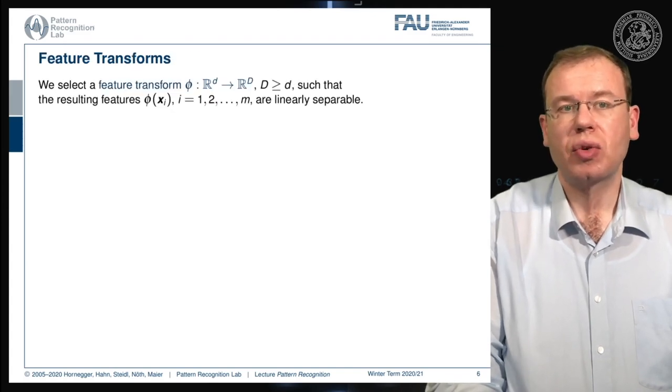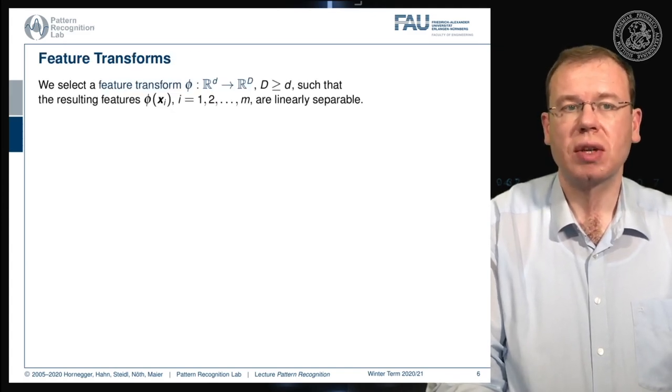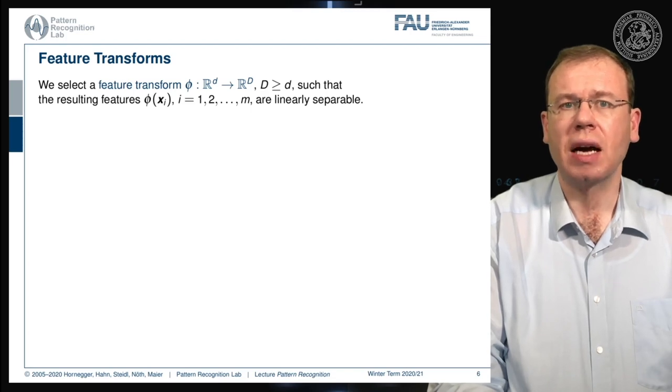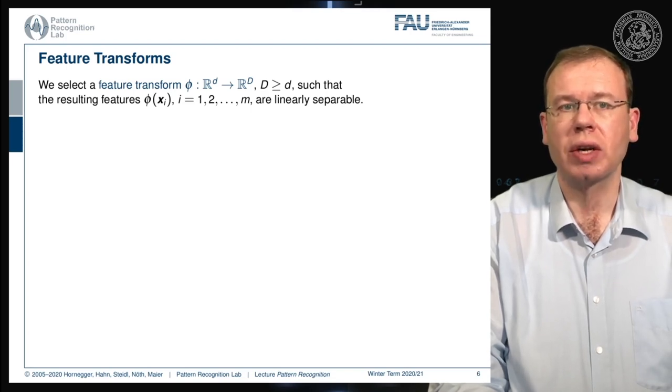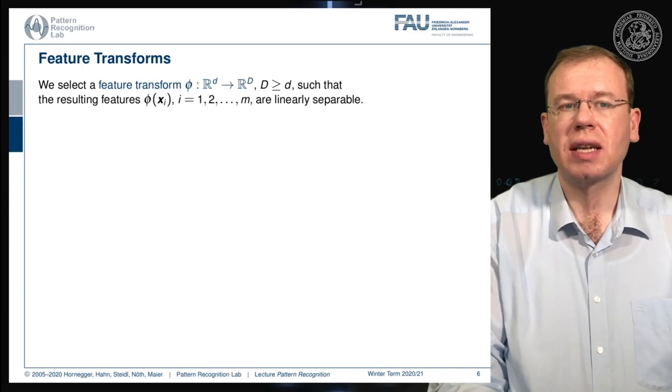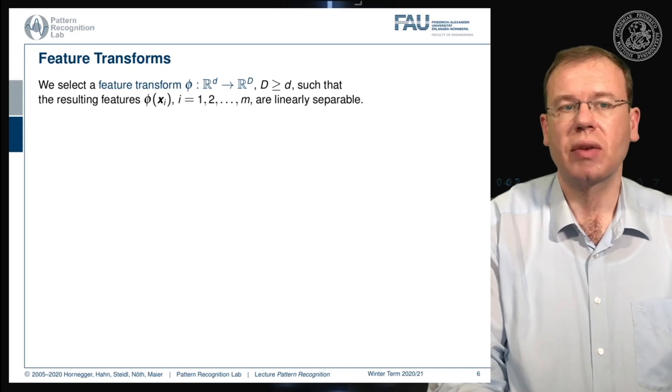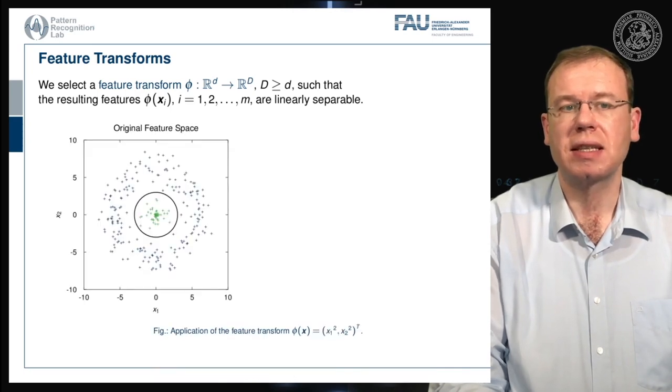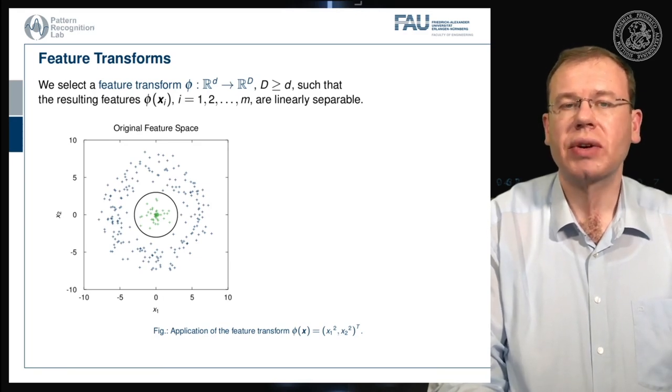We can use feature transforms now and this feature transform phi is mapping from space D dimensional to a capital D dimensional space where capital D is larger or equal to D such that the resulting features are linearly separable. Let's look into one example. Here we have some original feature space that is centered around zero and all the observations from one class are in the center and all the observations from the outer class are outside aligned.